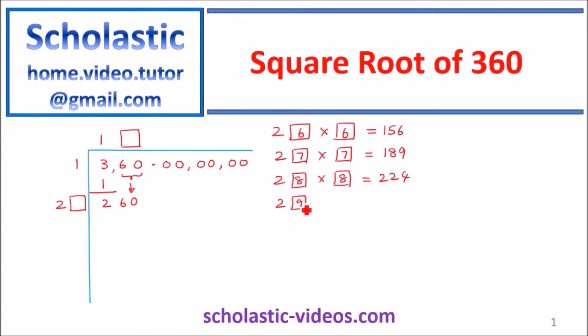Go for the next one, 29 times 9 is equal to 2, 6, 1. So now we got a number greater than 2, 60. So therefore we stop there and then use the previous number, 28. 8 should go in that square, 28 times 8 is equal to 2, 2, 4. So you put 2, 2, 4 below 2, 6, 0. 2, 2, 4 below 2, 6, 0 and take away 2, 2, 4 from 2, 6, 0. We get 36.